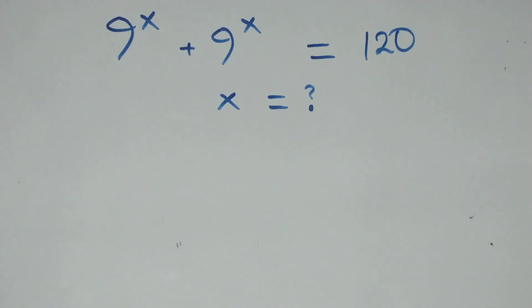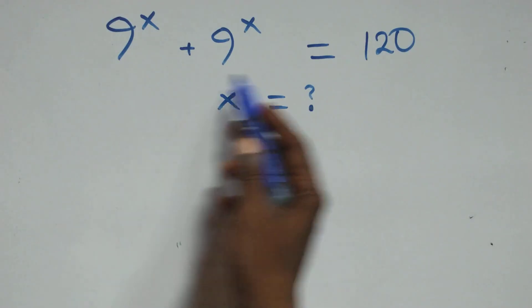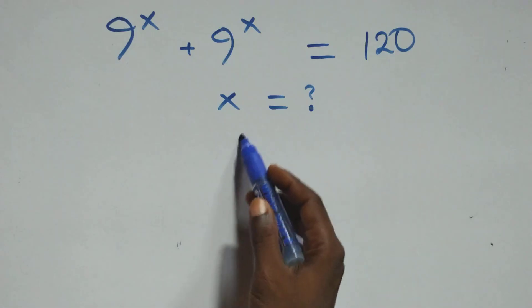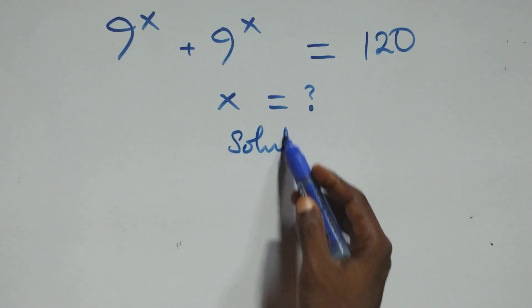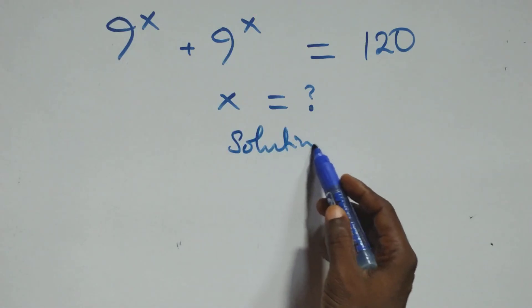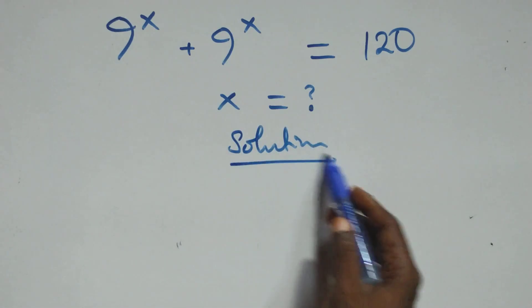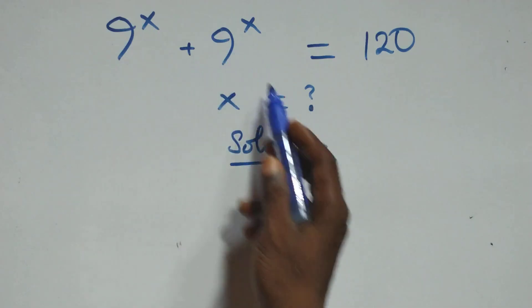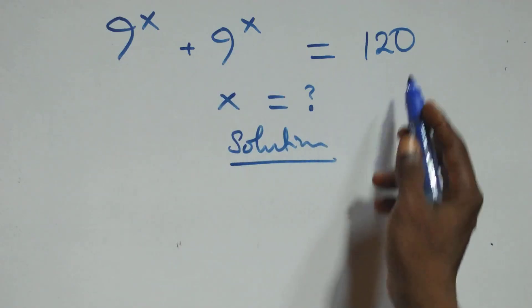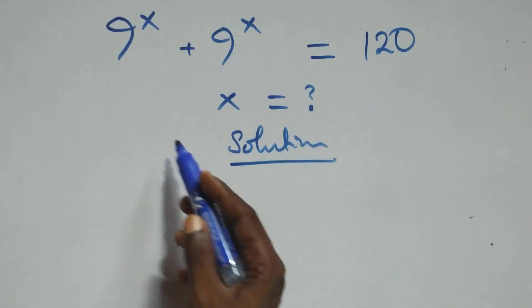Hello, you're welcome. How to solve this nice exponential equation. What we have is 9 raised to the power x plus 9 raised to the power x equals 120.